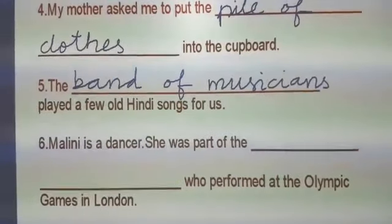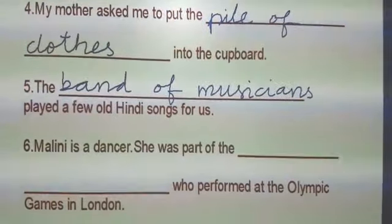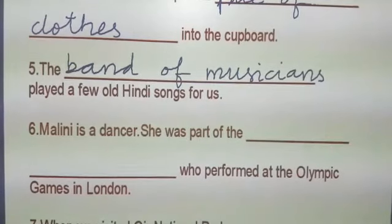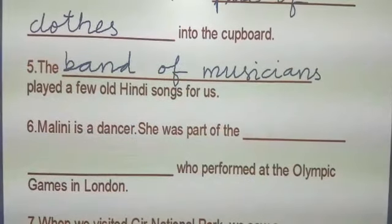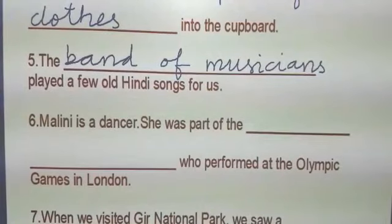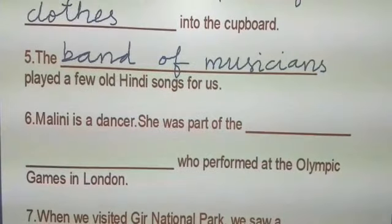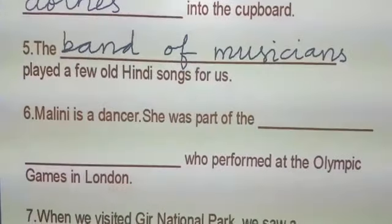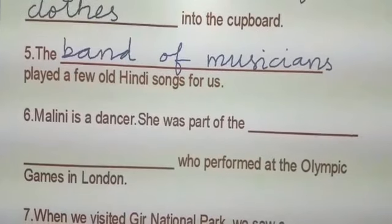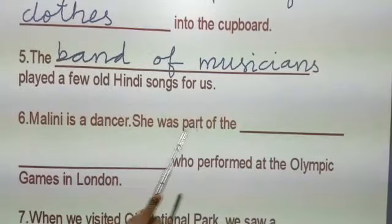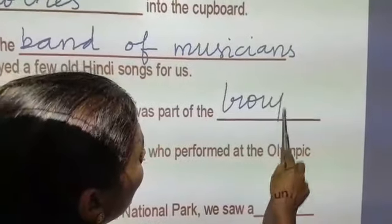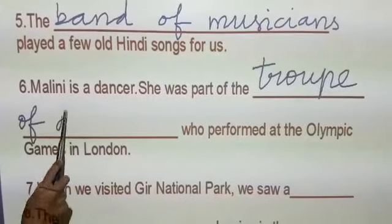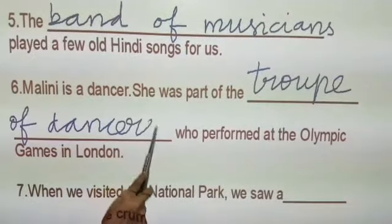Number six: Malini is a dancer. She was part of the dash who performed at the Olympic Games in London. Children, what are the answers? Pack of cards, bunch of bananas, troop of dancers, pride of lions. They have given the clue in the sentence itself — dancer. Yes, very good. Troop of dancers. D-A-N-C-E-R-S. All understood, children?